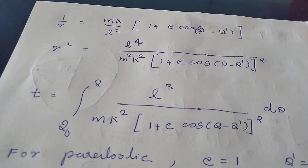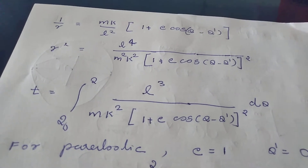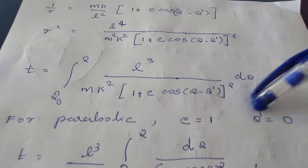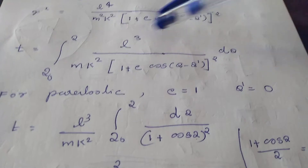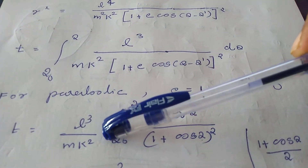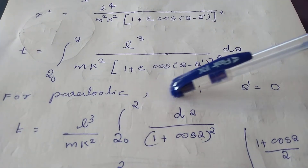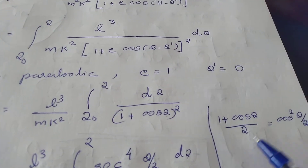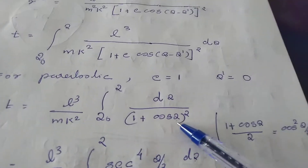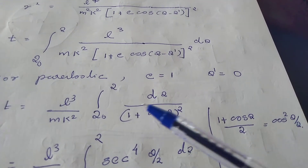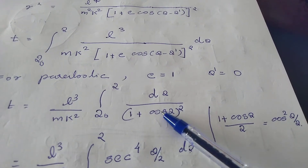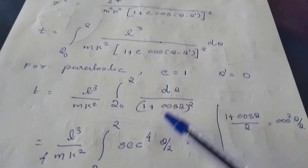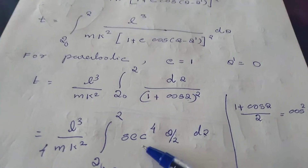Now let's do the parabolic case. For parabolic, the eccentricity e is equal to 1, and one of the turning point angles is chosen as theta dash equal to 0. Substituting, t equals L cubed by mk squared times the integral from theta0 to theta of d theta divided by (1 plus cosine theta) squared. Again, 1 plus cosine theta is known: 1 plus cosine theta by 2 equals cosine squared theta by 2, so 1 plus cosine theta equals 2 cosine squared theta by 2. Then (2 cosine squared theta by 2) squared equals 4 cosine to the 4th theta by 2. So 1 by cosine to the 4th theta by 2 means secant to the 4th theta by 2.